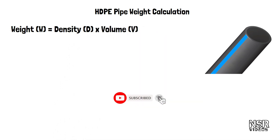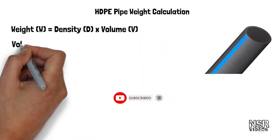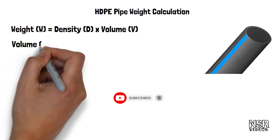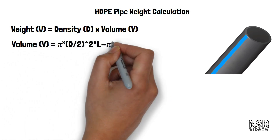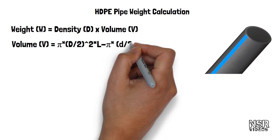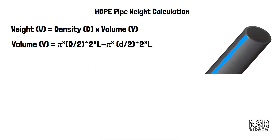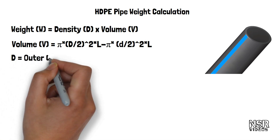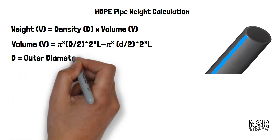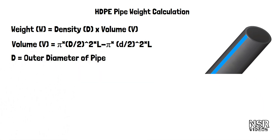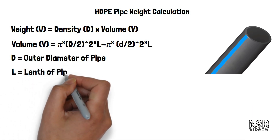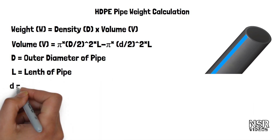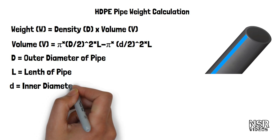So first, volume equals to pi into (D/2) squared into L, minus pi into (d/2) squared into Ln. Here, D equals to outer diameter of pipe, L equals to length of pipe, and d equals to inner diameter of pipe.